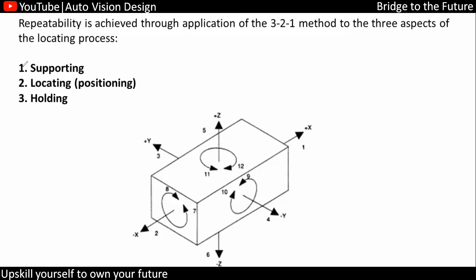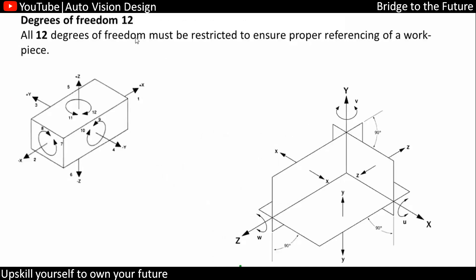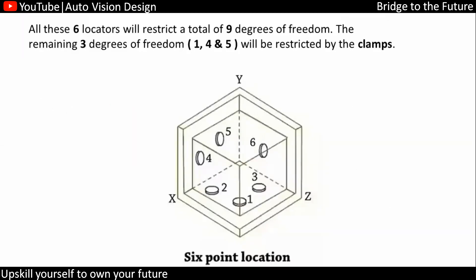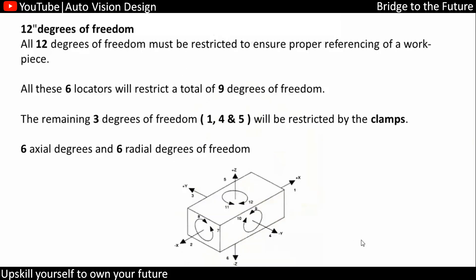We have supporting, locating, and holding the part — these are the 3 major things we are going to do. This part we need to position and locate in the axis system, so for that we are going to use x, y, z translation as well as rotation. This is also known as the 3-2-1 principle — 3 points at the bottom, 2 over here, and 1 over here.